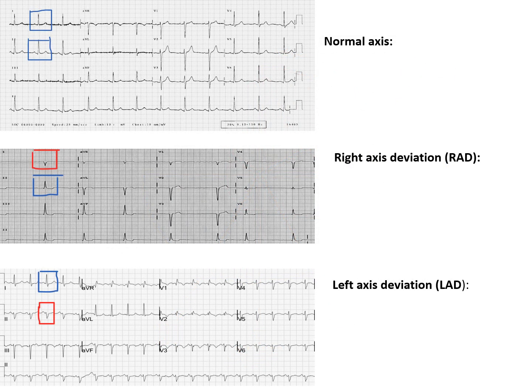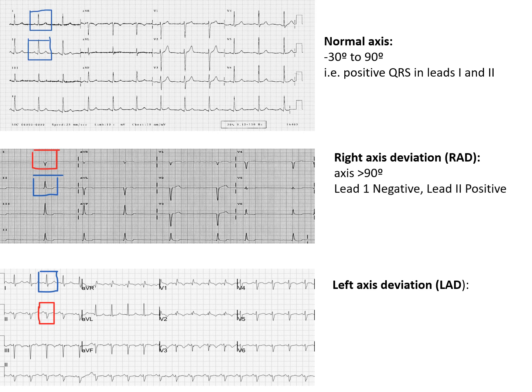Normal axis is between minus 30 and 90 degrees, and the QRS complex is positive in both lead I and lead II. In right axis deviation, the axis is more than 90 degrees and the QRS complex is positive in lead II but not in lead I. In left axis deviation, the axis is less than minus 30 degrees and the QRS complex is positive in lead I but negative in lead II.